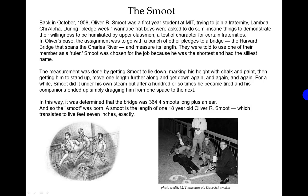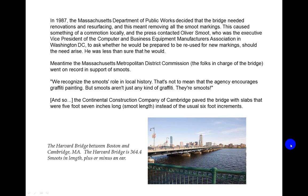A Smoot is the length of one 18-year-old Oliver R. Smoot, which translates to 5 feet 7 inches exactly. In 1987, the Massachusetts Department of Public Works decided the bridge needed renovations and resurfacing, which meant removing all the Smoot markings. This caused something of a commotion locally, and the press contacted Oliver Smoot — who was the Executive Vice President of the Computer and Business Equipment Manufacturers Association in Washington, D.C. — to ask whether he would be prepared to be reused for new markings.